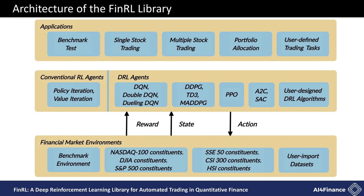The architecture of the FinRL library has three layers. At the top is the application layer, supporting different trading tasks. In the middle is the DRL agents layer. We provide a list of fine-tuned algorithms. At the bottom is the environment layer, including several stock markets. The agent interacts with the environment, searching for a balance between exploration and exploitation, whether to repeat prior decisions or to make new actions hoping to get higher rewards.